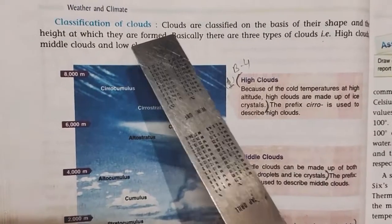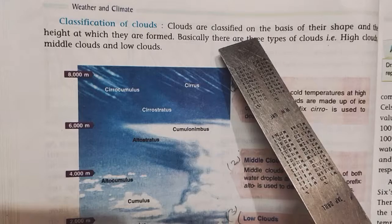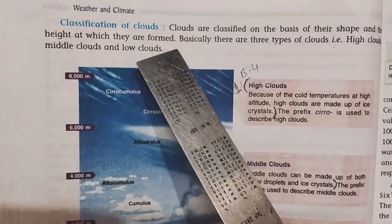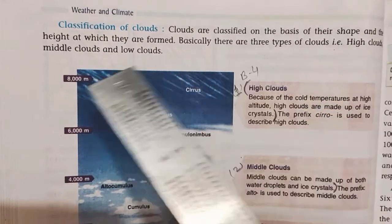Classification of clouds. Clouds are classified on the basis of their shape and the height at which they are formed. Basically there are three types of clouds: high clouds, middle clouds, and low clouds.